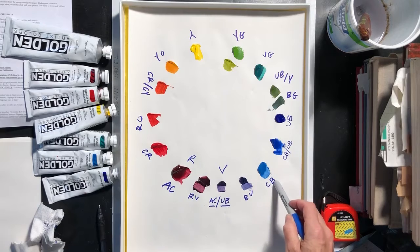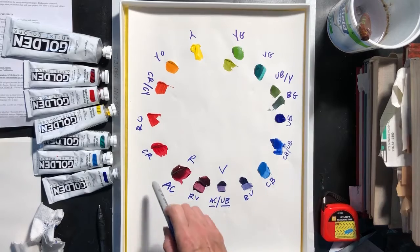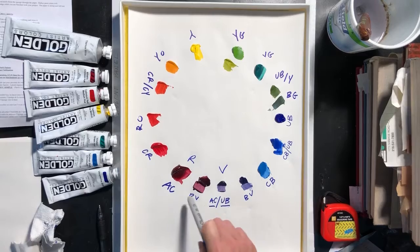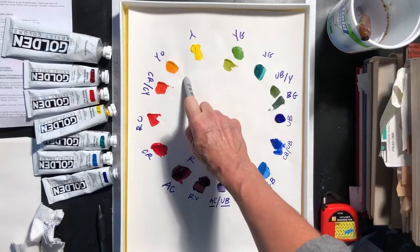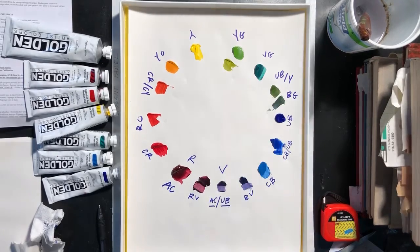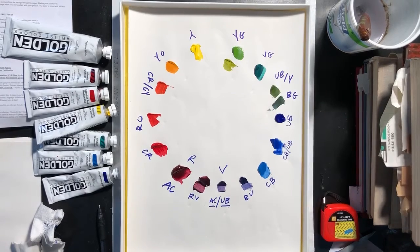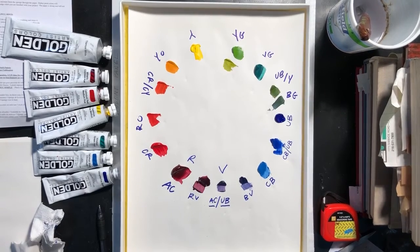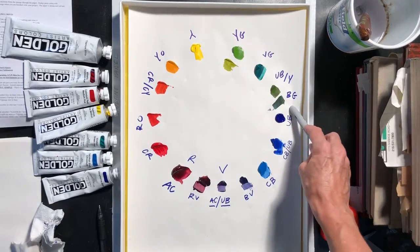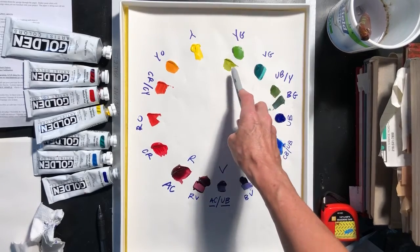Then between the secondary colors and the primary colors, there are tertiary colors. And that's your blue violet, your red violet, your red orange, your yellow orange, your yellow green, your blue green. And those are when you're mixing toward the color that's next to it on the color wheel that makes it. So it has more quantity of blue in it than yellow to make a blue green. More quantity of yellow in it than green to make a yellow green.